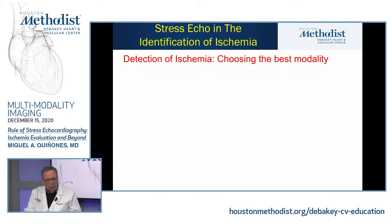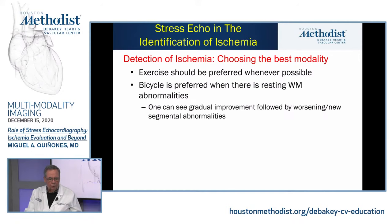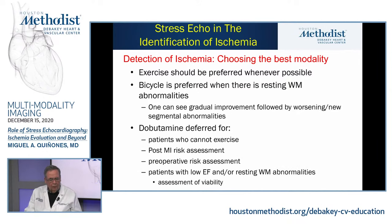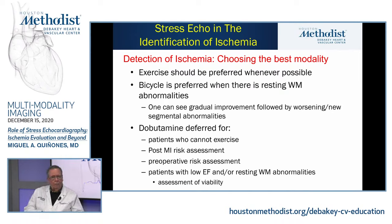When ordering a stress test, if the patient can exercise that should always be preferred — you get better quality plus functional assessment of EKG and exercise duration. The bike is preferred when there are resting wall motion abnormalities, for elderly or anxious patients, and allows observation of the gradual improvement-then-worsening pattern. Dobutamine is reserved for patients who cannot exercise at all; its most important current use is viability assessment — evaluating the low-dose improvement and high-dose worsening pattern to assess contractile reserve.